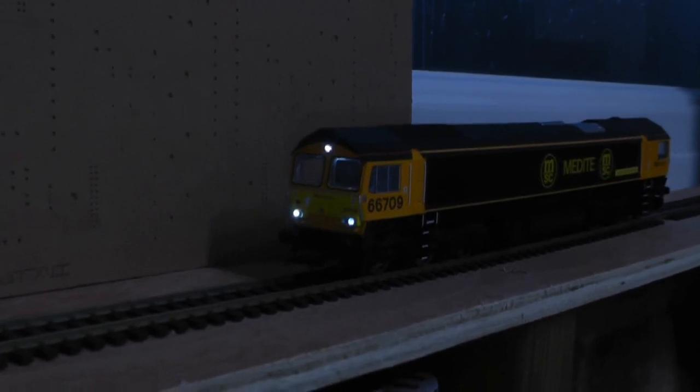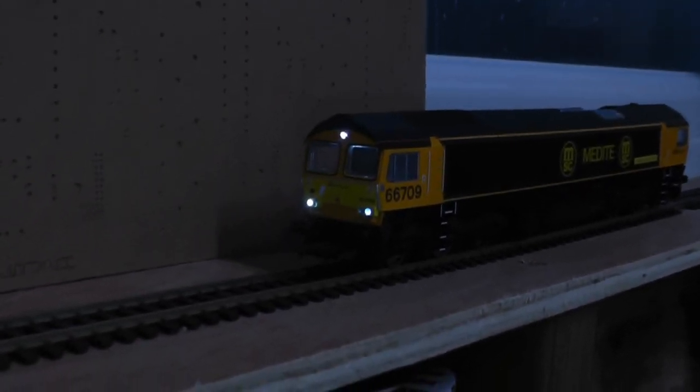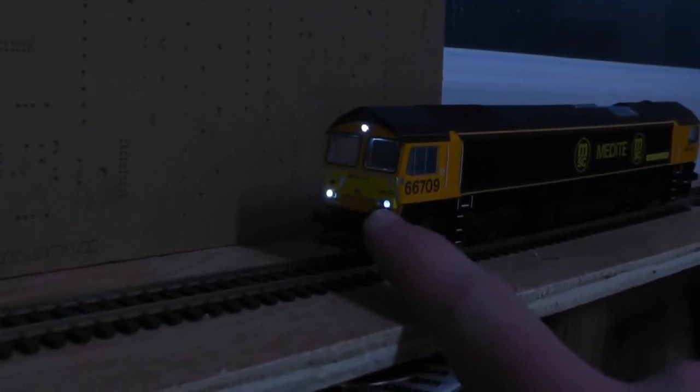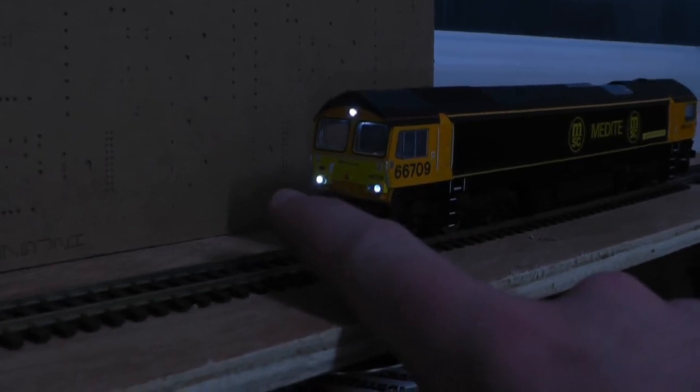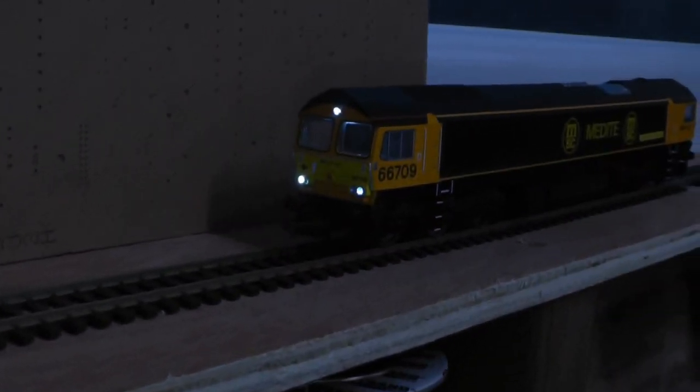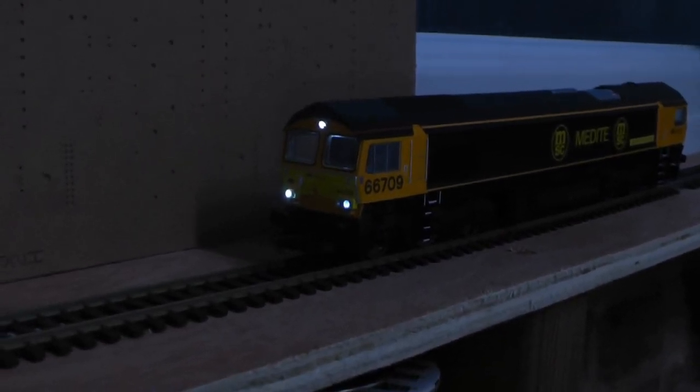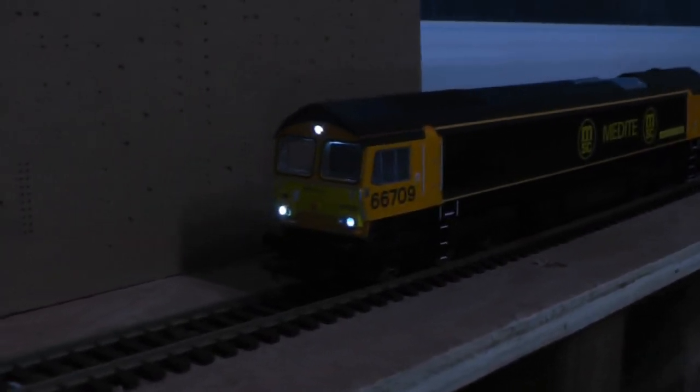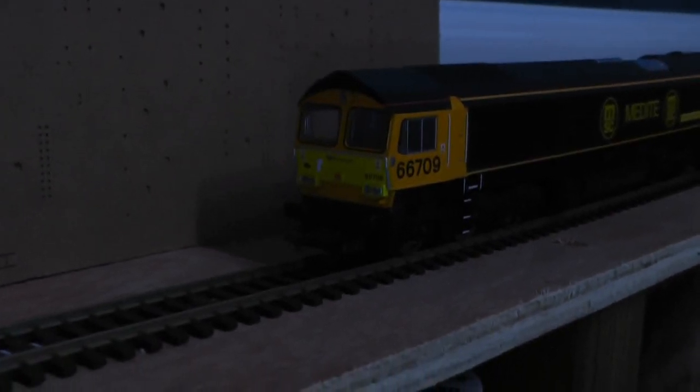So here we go, this is it obviously on the test track. So you've got your slightly dimmer light, your bright day running light, your top marker light. There's a slight bit of light bleed in the cab, but that can be sorted with a bit of insulation tape. So then again if I change the direction, you'll see there that you've got your rear lights.